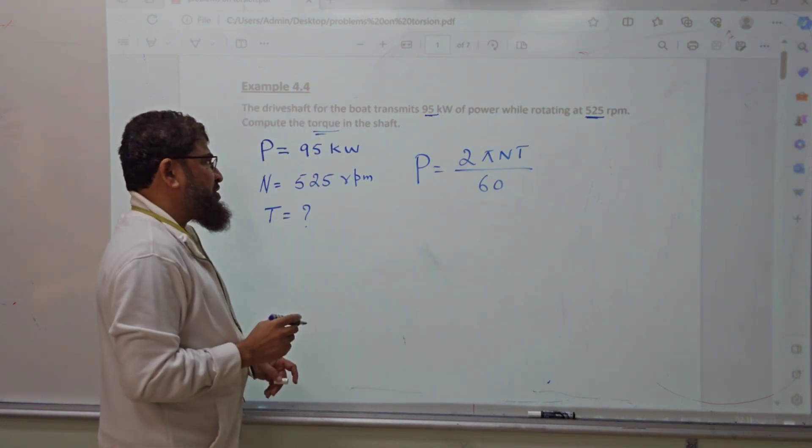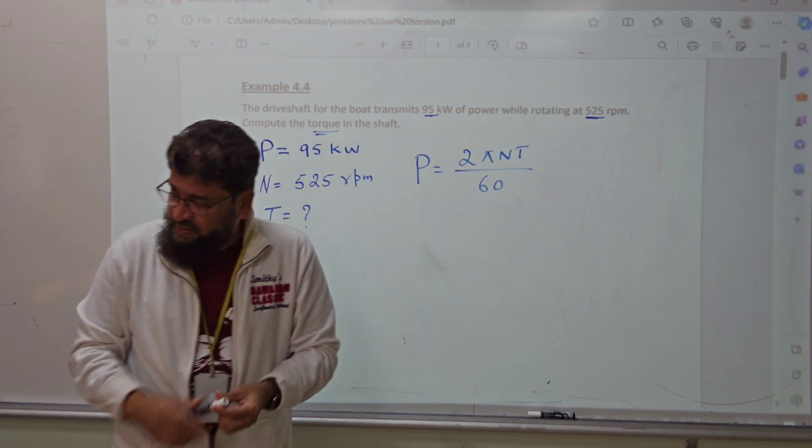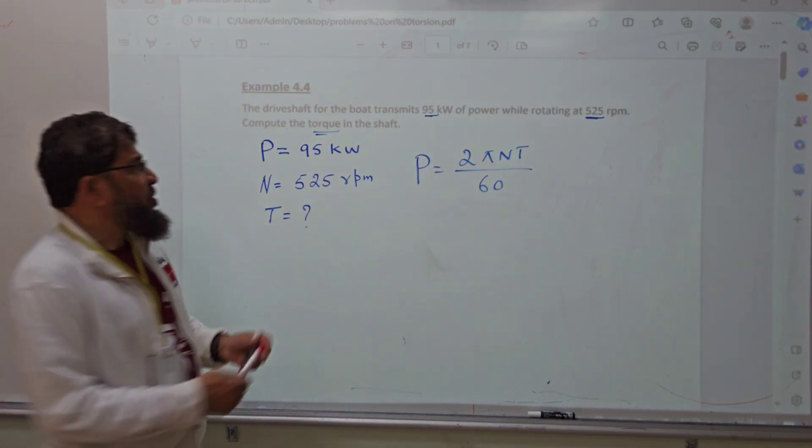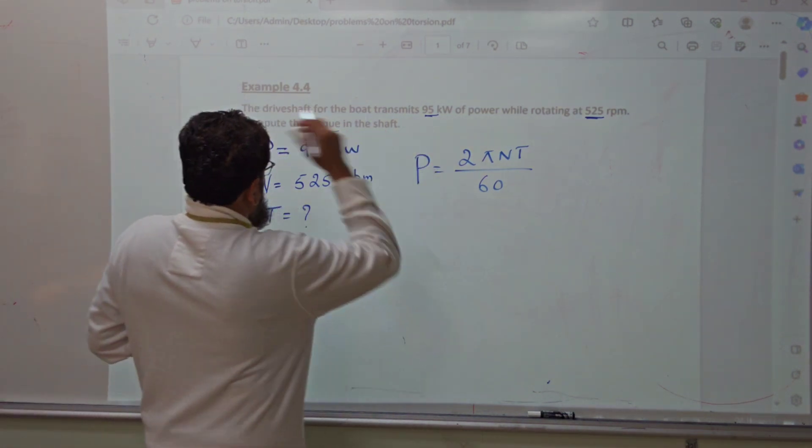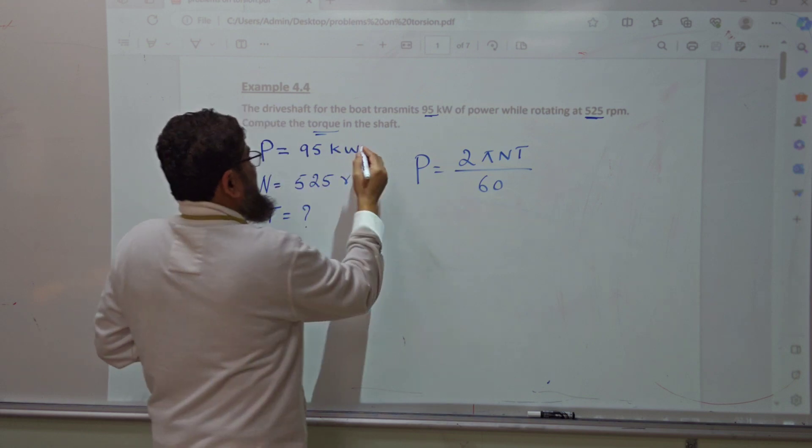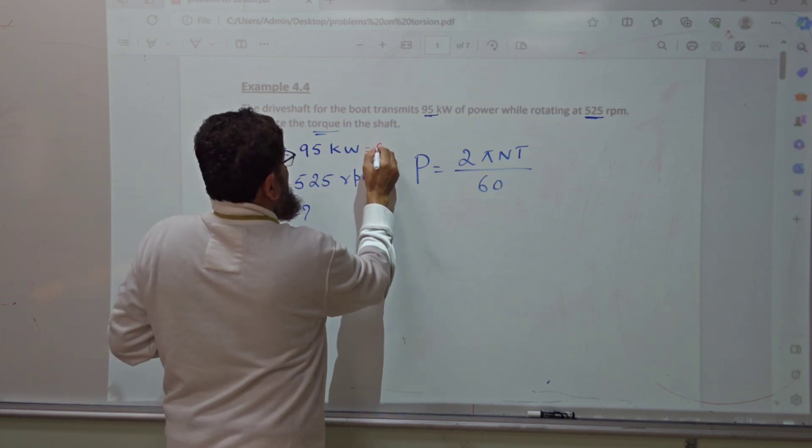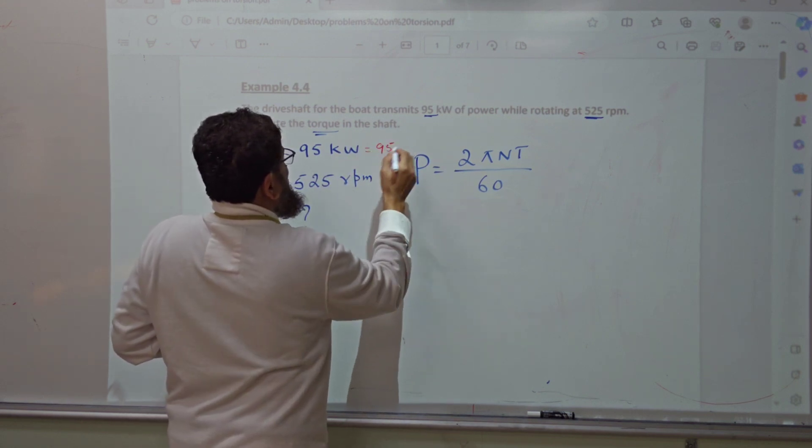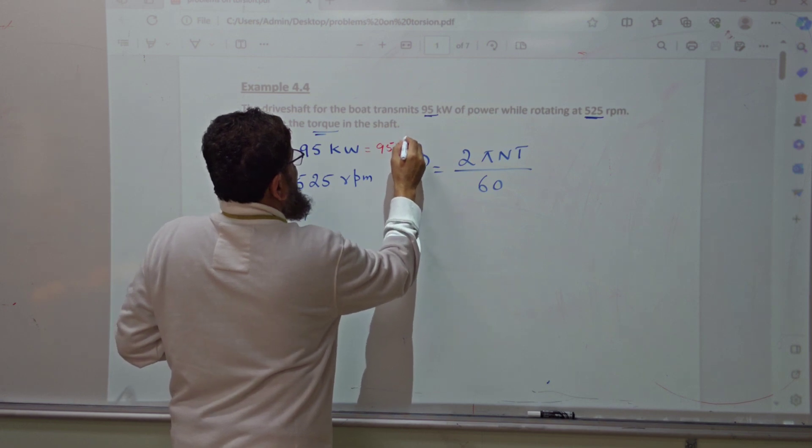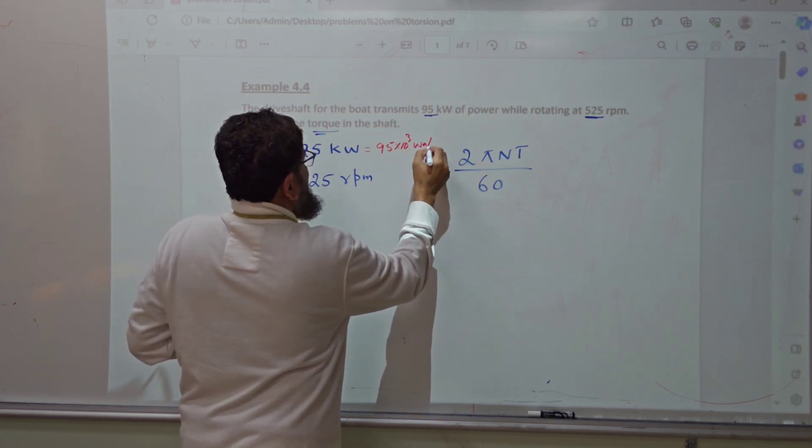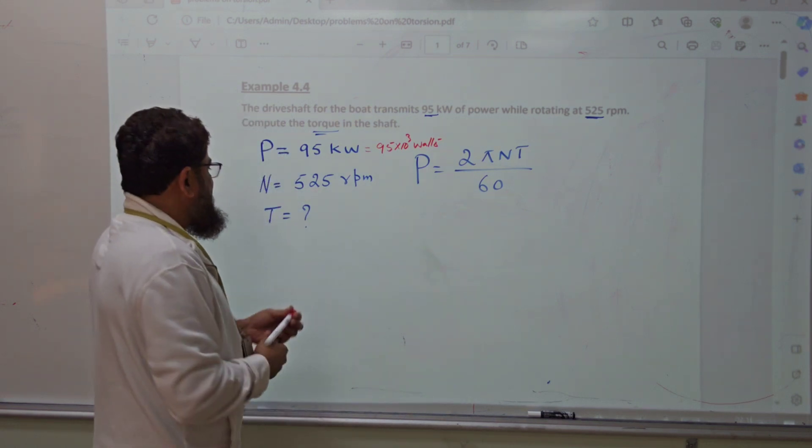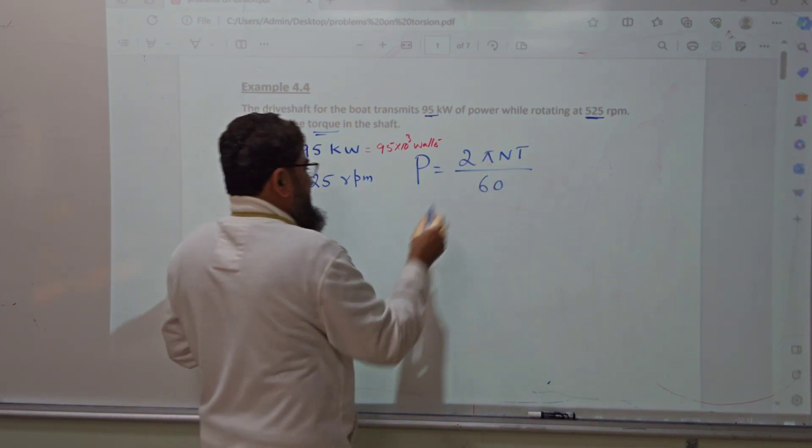Here he has given the power as 95 kilowatts. Let's try to change it to watts, so that becomes 95 times 10 to the power 3, divided by 2 pi. Now you just substitute the values.